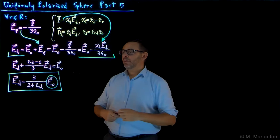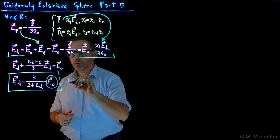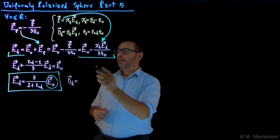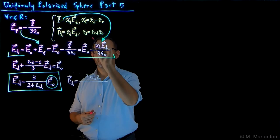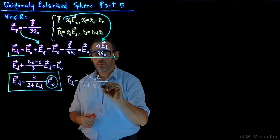Finding D_D as a function of E0 is straightforward. Using the definition D_D equals epsilon_D times E_D, we obtain D_D equals 3 times epsilon_rD times epsilon naught divided by (2 plus epsilon_rD) times E0. This is the second expression we were looking for — D_D as a function of E0.